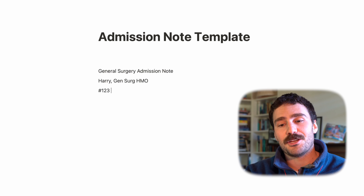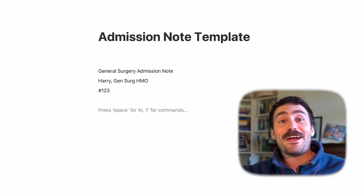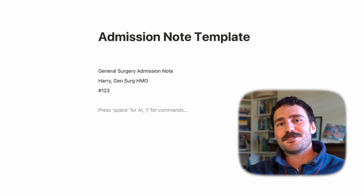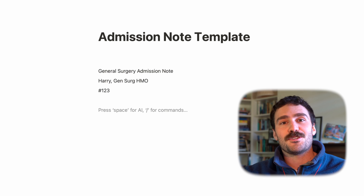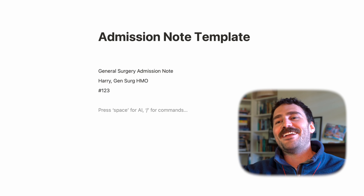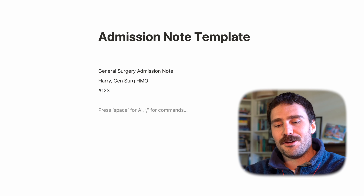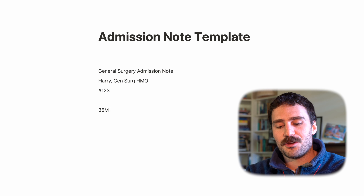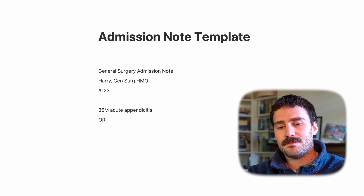Next up is the one-line summary that completely encapsulates the patient's reason for admission. This can be a little tricky, and you don't have to write it first — you might come back to it after you've taken all the history, done all the exam findings, and gone through all the details. Essentially, it might be something like: 'A 35-year-old male who presents with acute appendicitis.'